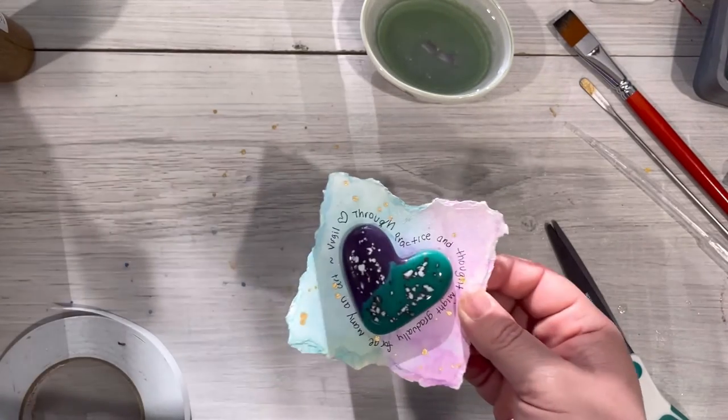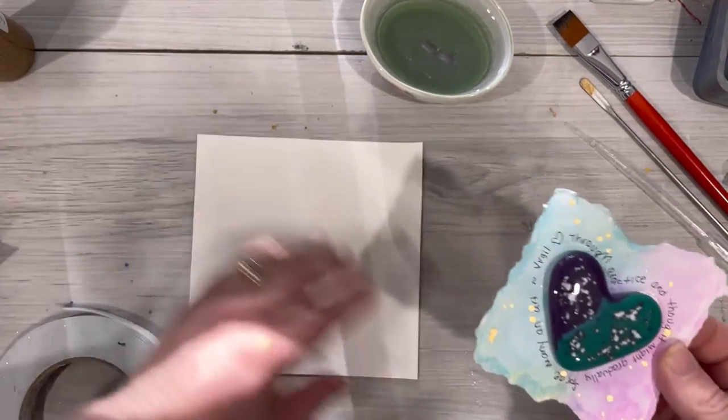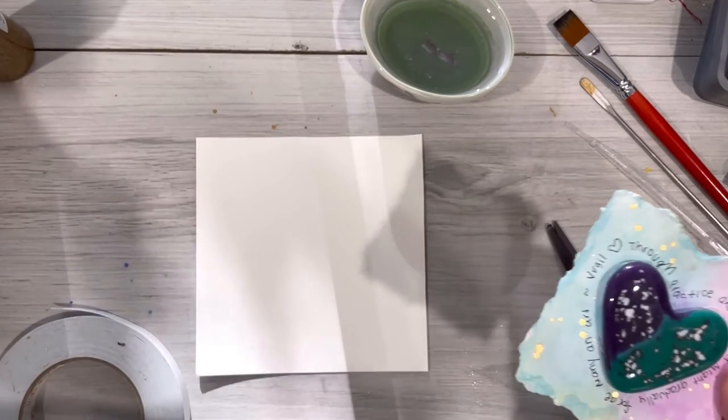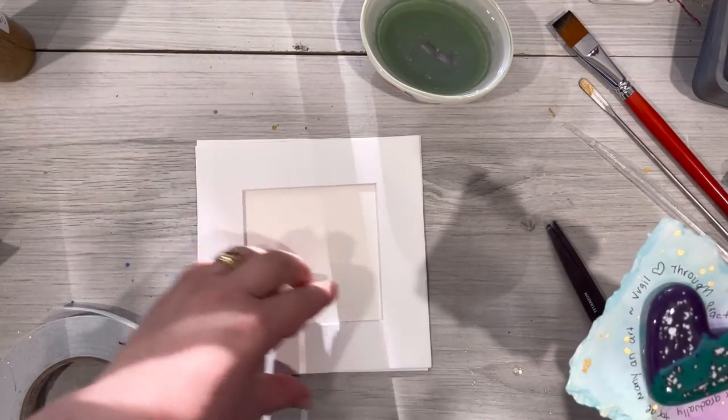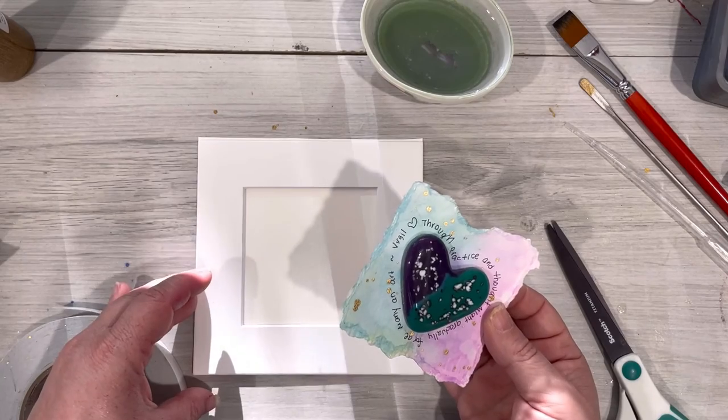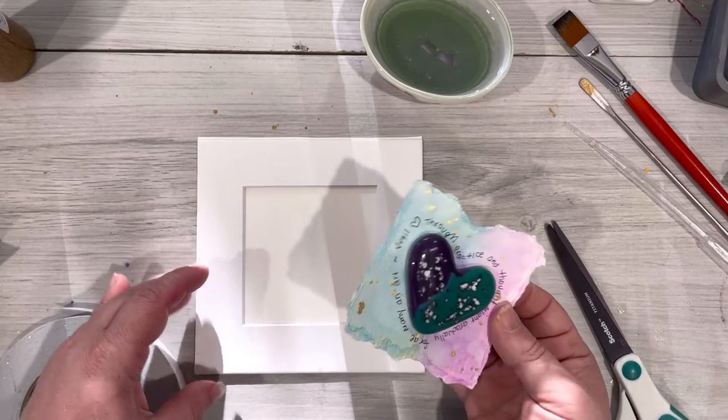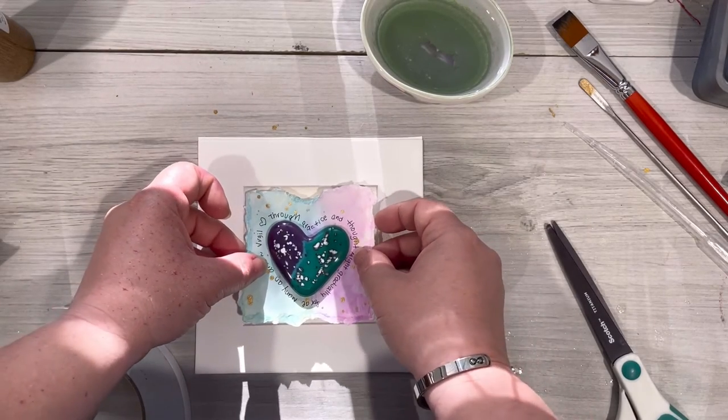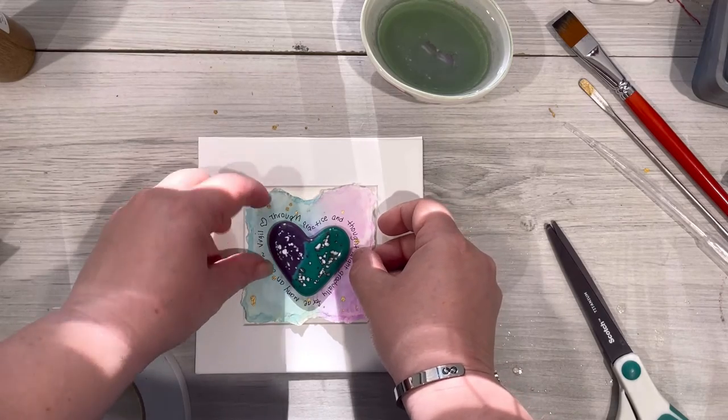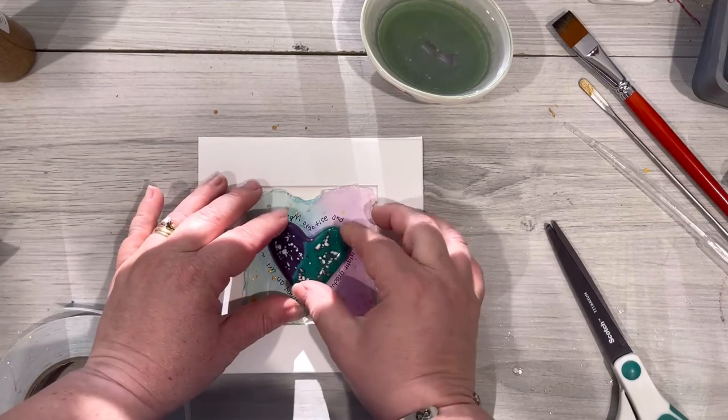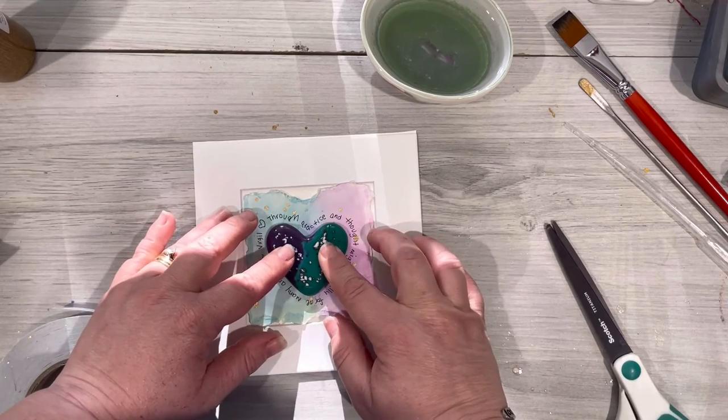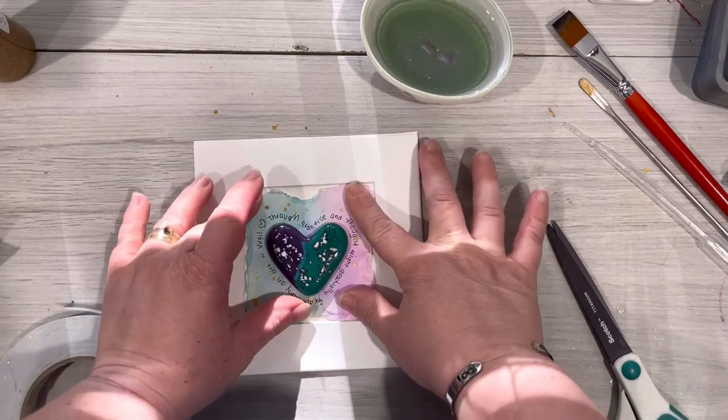To do this you want to lay your paper down and then lay your mat on top. Do not try to eyeball this because any little bit off in any one direction and it won't fit correctly in the frame. So go ahead and place it as carefully as you can without shifting that mat and then your piece is ready to put into the frame.